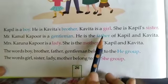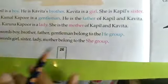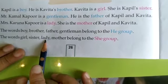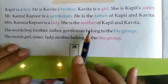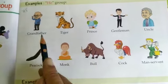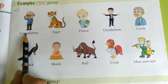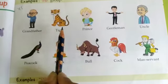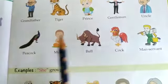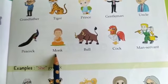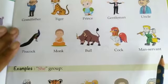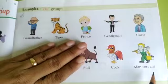All the he group words are written in blue color. The words girl, sister, lady, mother belong to the she group, and all these are marked in red. Now let us see the examples in the he group: grandfather, tiger, prince, gentleman, uncle, peacock, monk, bull, cock, manservant. These are all in the he group — that is, male.